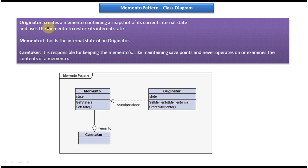So you can read this one. Originator creates a Memento containing a snapshot of its current internal state and uses the Memento to restore its internal state.